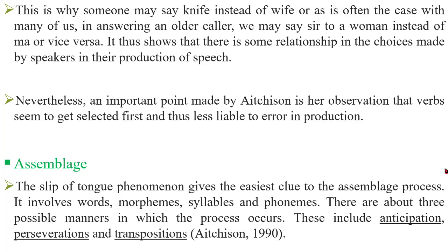An important observation made by Eckison is that verbs seem to get selected first, and are therefore less liable to error in production. Whenever we select words to form a sentence or an utterance, verbs are the ones selected first and are less prone to errors, while other words are more liable to errors in production. The second broad process is assemblage.